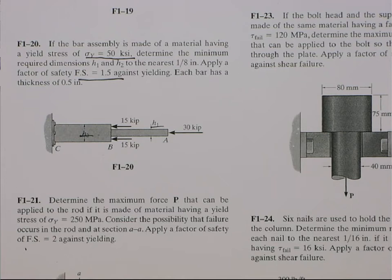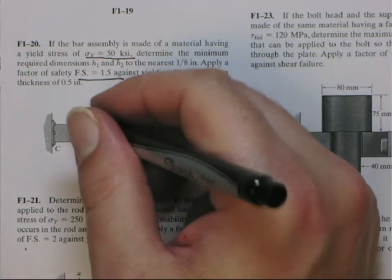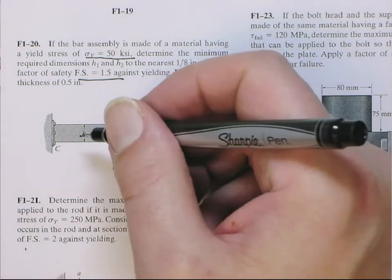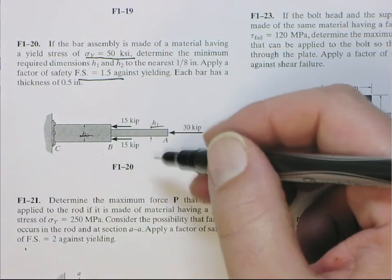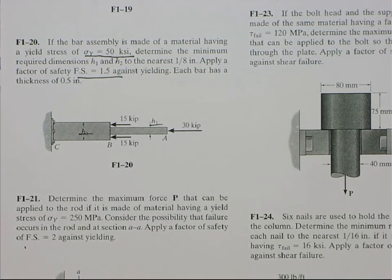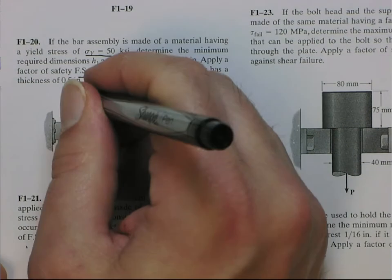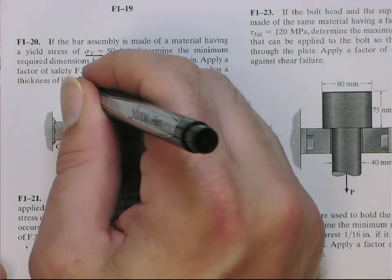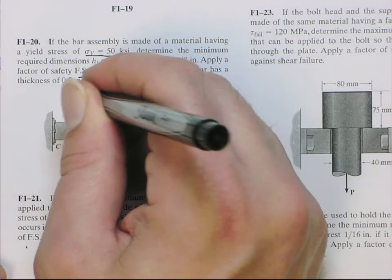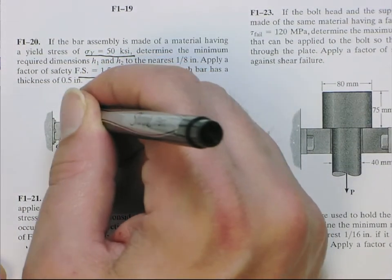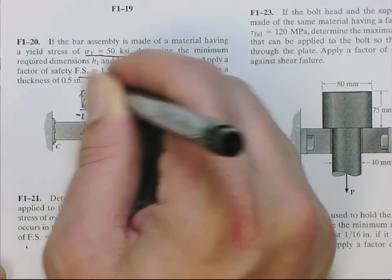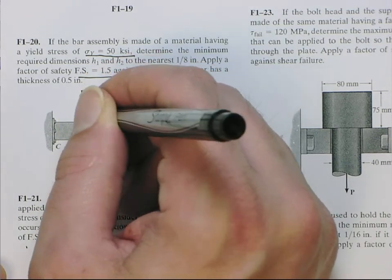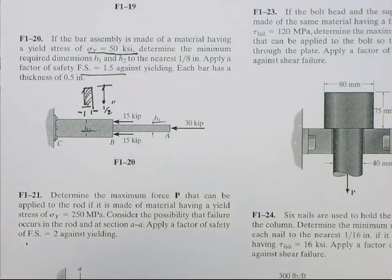It's a rectangular bar. So through the thickness of the page is a half of an inch. But they still want H1 and H2. So it's a rectangular cross-section — each element has a rectangular cross-section. This is a half of an inch, and this is the height H2 here and H1 there.